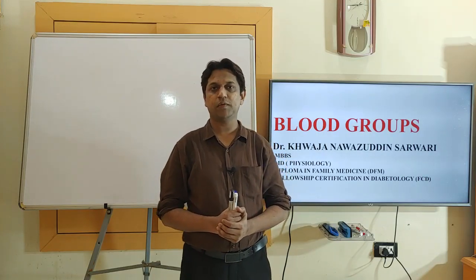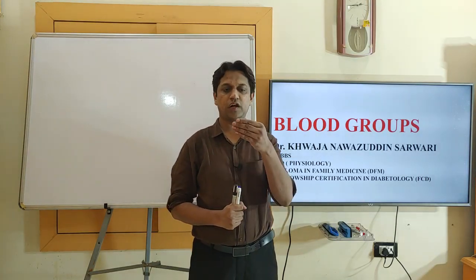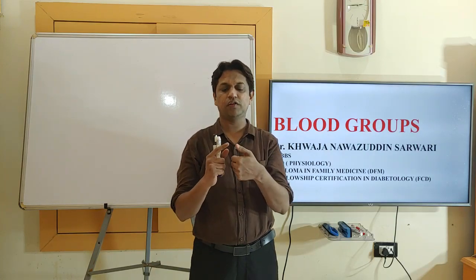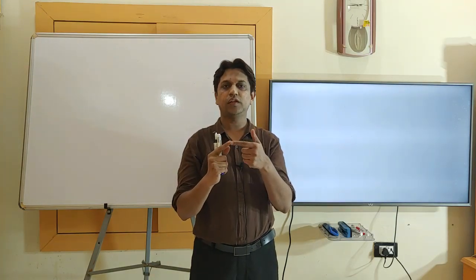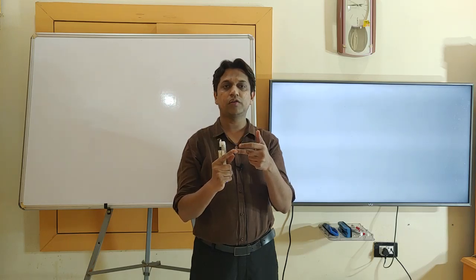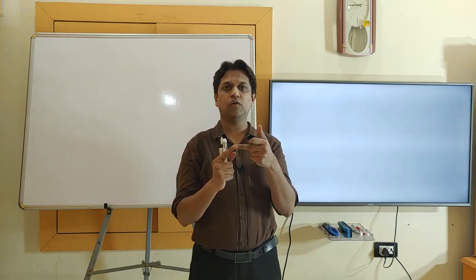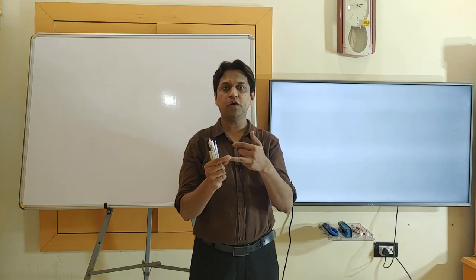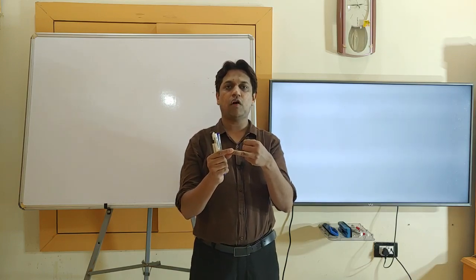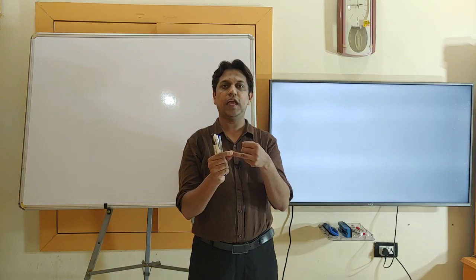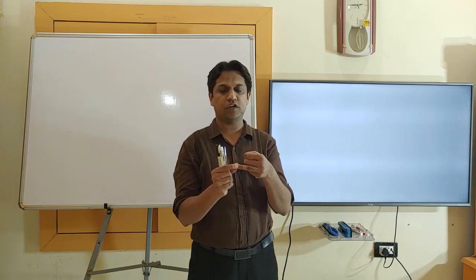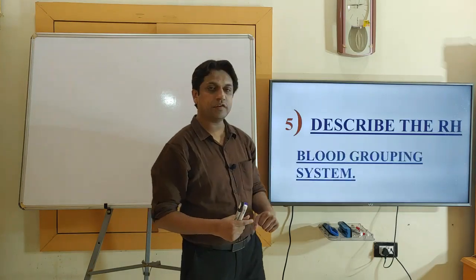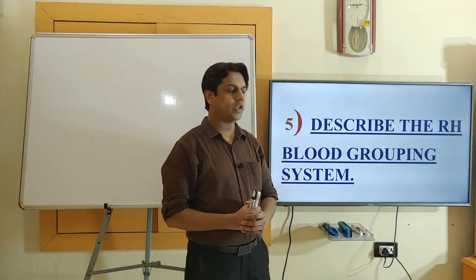Out of the 10 specific learning objectives, we have discussed the first four. In the first video, we discussed the history, classification of blood groups, agglutinogen, agglutinin, agglutination, and Landsteiner's Law. In the second video, we discussed the ABO blood grouping system in detail. Today, as a continuation, we will discuss another three objectives.